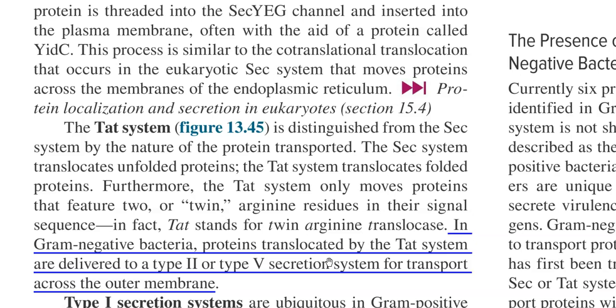The TAT system can be distinguished from the Sec system by the nature of the protein transported. The Sec system is involved in translocation of unfolded proteins, whereas the TAT system translocates folded proteins alone. Furthermore, the TAT system only moves proteins that feature two — or twin — arginine residues in their signal sequence, which is the reason for the TAT acronym, referring to twin arginine translocases.